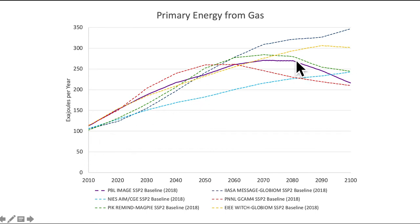This is particularly for a future that's part of what's called SSP2 baseline. SSP2 is the Shared Socioeconomic Pathway number two — the middle of the road. You can imagine a financial institution trying to calculate what might happen to gas and the financial implications if the world takes action.